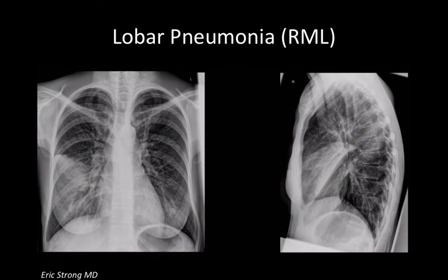Another example is a lobar pneumonia, which affects one lobe distribution. Looking at the frontal view, there is a pretty sharp margin of an infiltrate sparing the upper lung field and filling in the lower lung field. Because it spares the diaphragm — the diaphragm is still sharp — it's more likely to be middle lobe. And because it touches the heart and obliterates the margin of the heart, that makes me think more likely it's a middle lobe infiltrate.